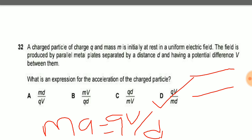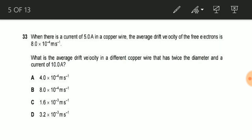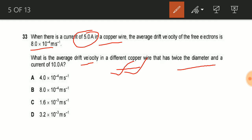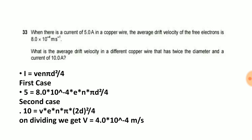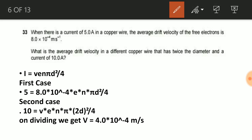Now let us see question number 33. We need to find the drift velocity of a copper wire. In the first case, 5 amperes of current is flowing in a copper wire with a given drift velocity. In the second case, we need to find the drift velocity of the same copper wire whose diameter is twice and current is also twice, that is 10 amperes. If the material is the same, the number of electrons per unit volume n will be the same in both cases. We know the formula for current: I = nAve, where area A = πd²/4.